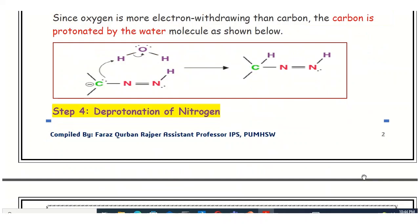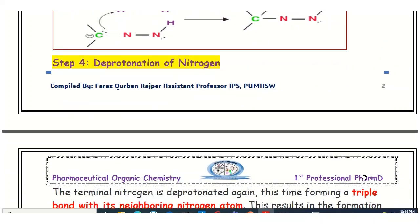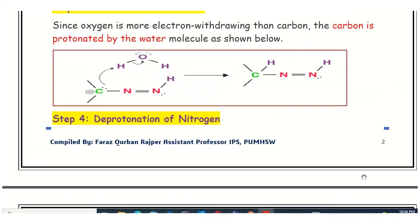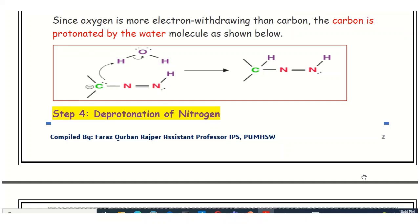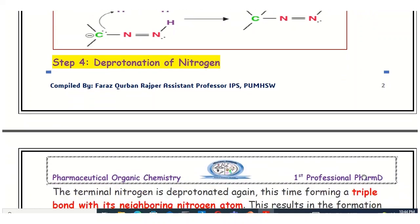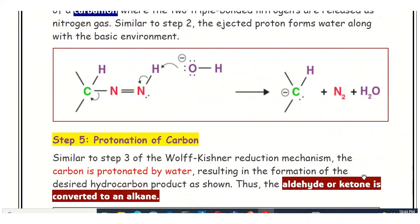Step four is the deprotonation of the terminal nitrogen, which again results in the formation of a carbanion. It is important to note that carbanion formation occurs in two steps: step two and step four. Step five is the protonation of the carbanion, ultimately converting it into the alkane. This was all about the Wolff-Kishner reduction. Check the description section for the quiz.